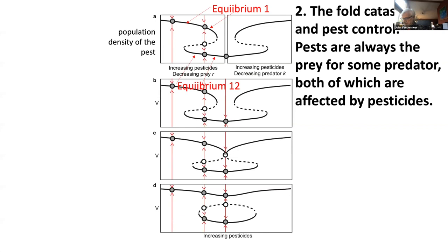What we have at the bottom graph here is what's called the hysteretic loop. The idea is that if one is applying pesticides, pests may be lowered at relatively low levels of pesticides, but eventually as pesticide application increases, the predators also get affected and the ultimate state is that the pest is at where it was before the pesticide regime began. But note, if the landscape is of the fold catastrophe type, there is what we might call a hidden equilibrium where the pest is indeed under control and will remain so as long as pesticides are not applied too frequently.